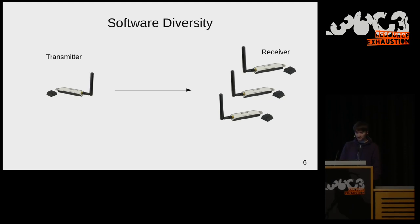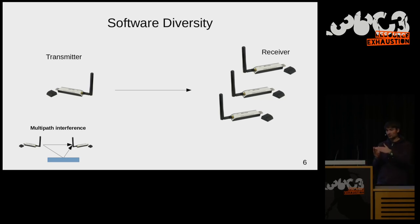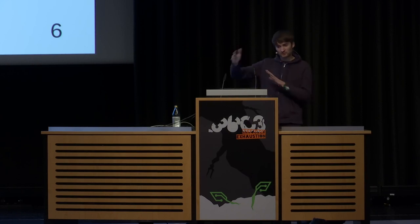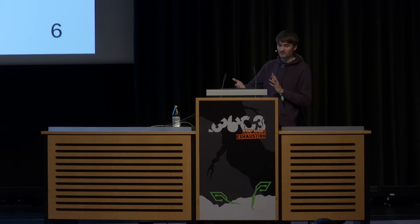In reality, software diversity helps quite a bit because of multipath interference. In the real world, objects cause reflections of the signal, and these reflections interfere at the receiver — either constructively or destructively — by pure chance. By placing several receivers at different locations, you twist the geometry of this triangle and get a better chance that at least one receiver won't suffer from destructive interference. In practice, this really helps a lot.